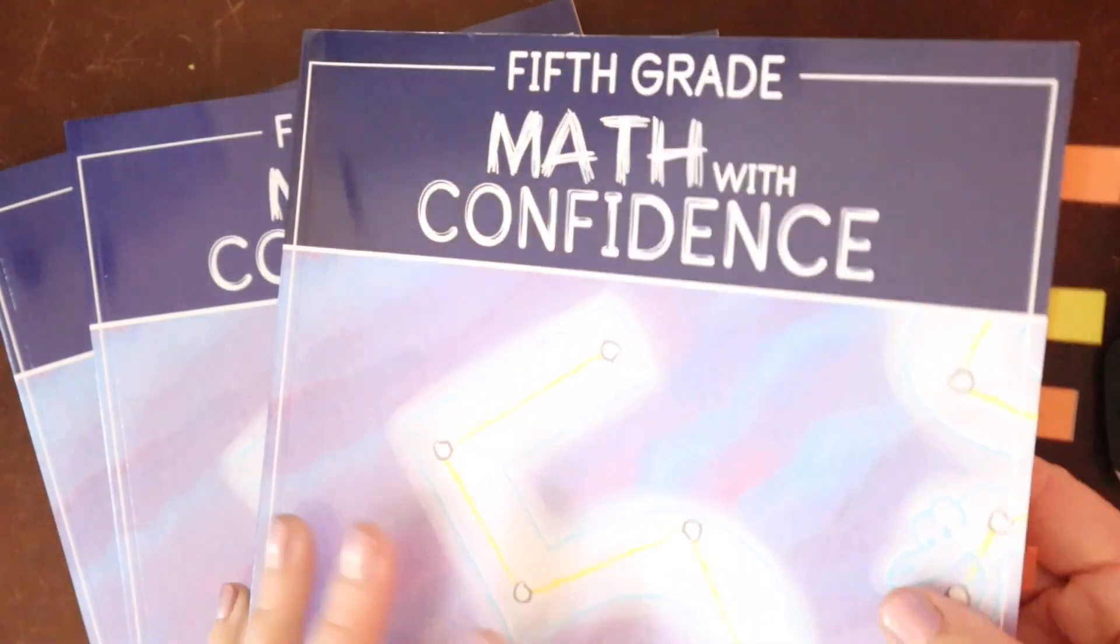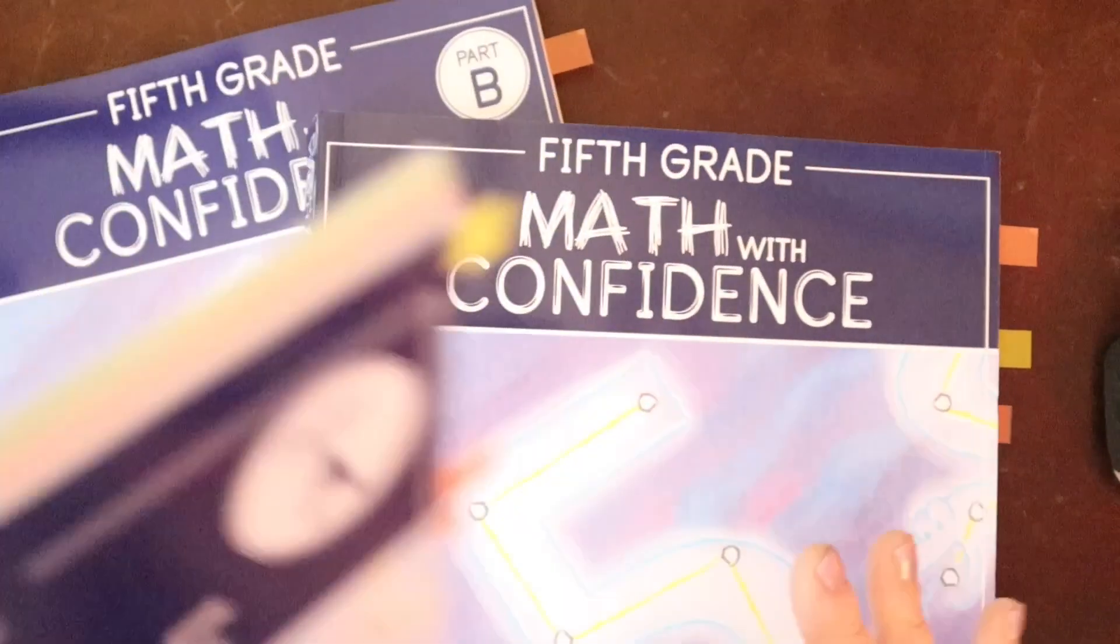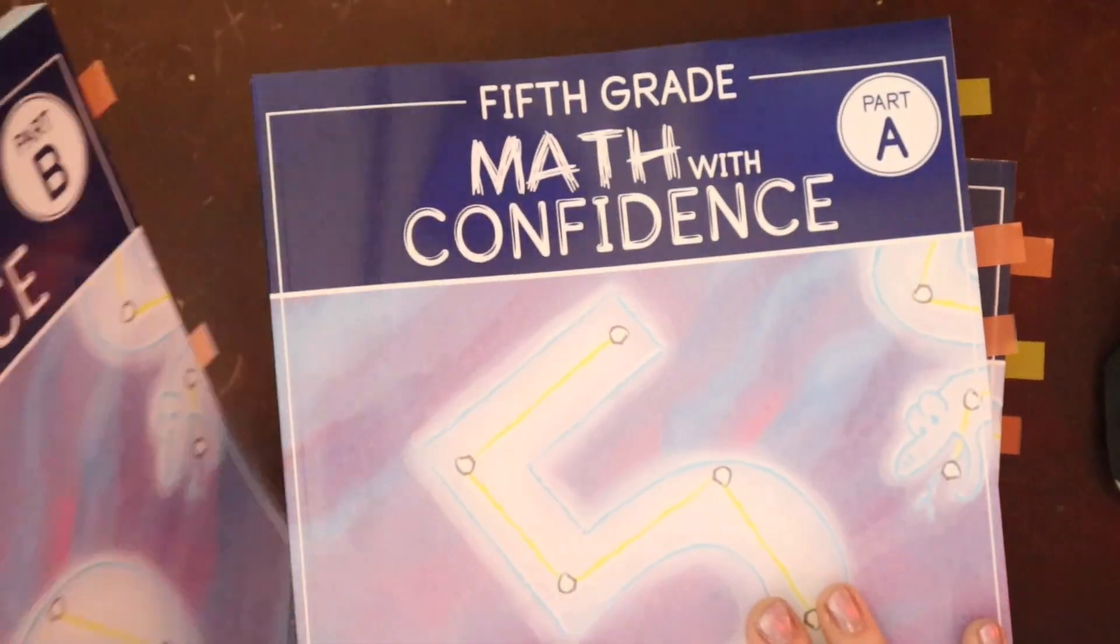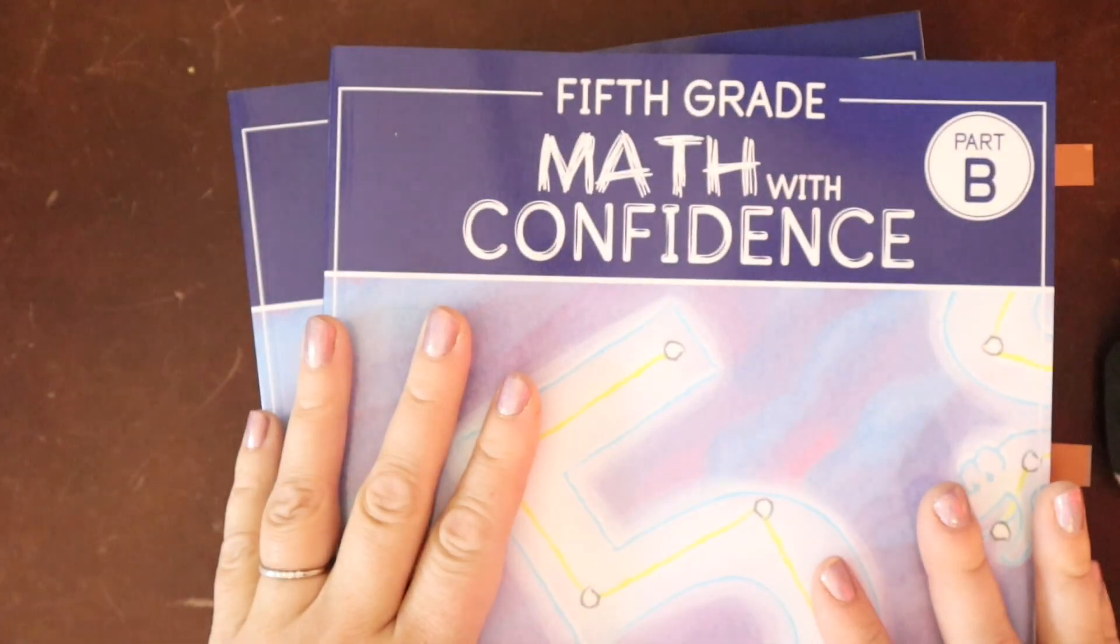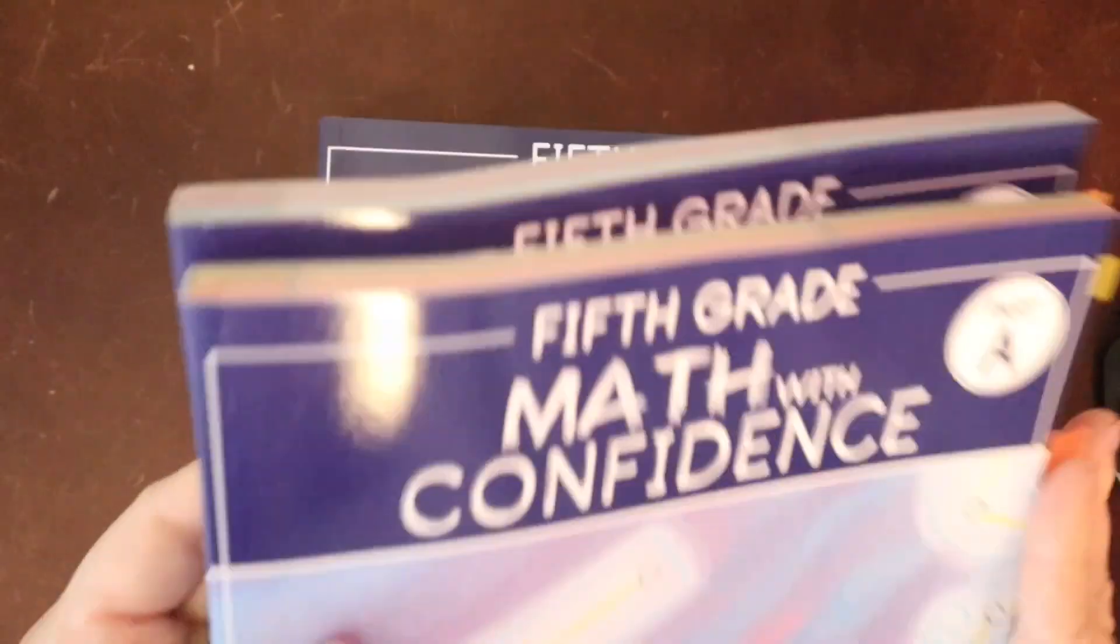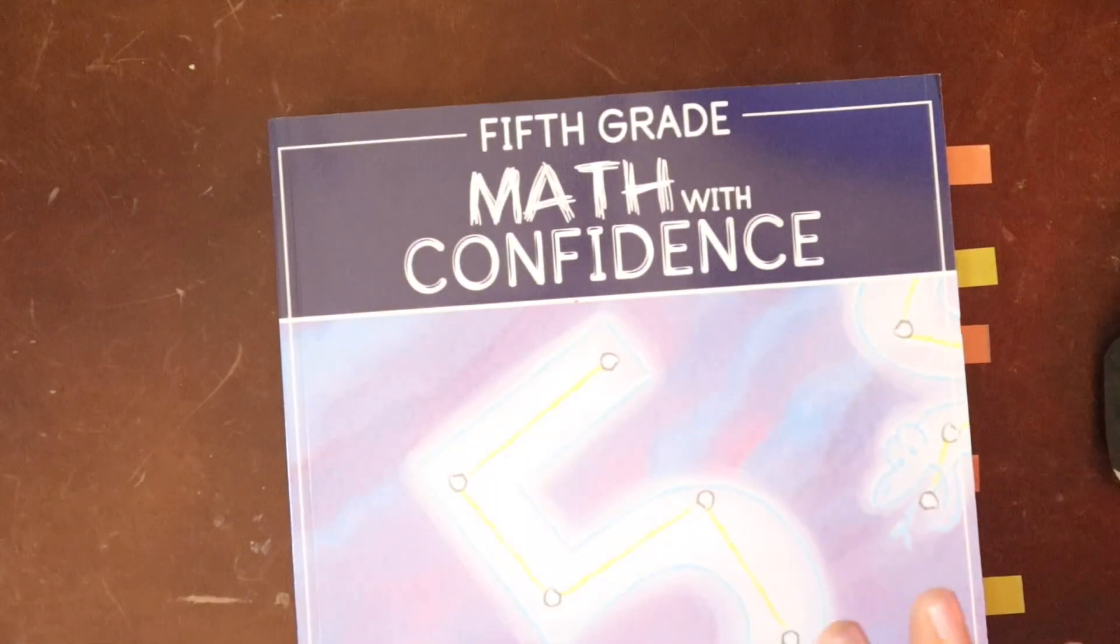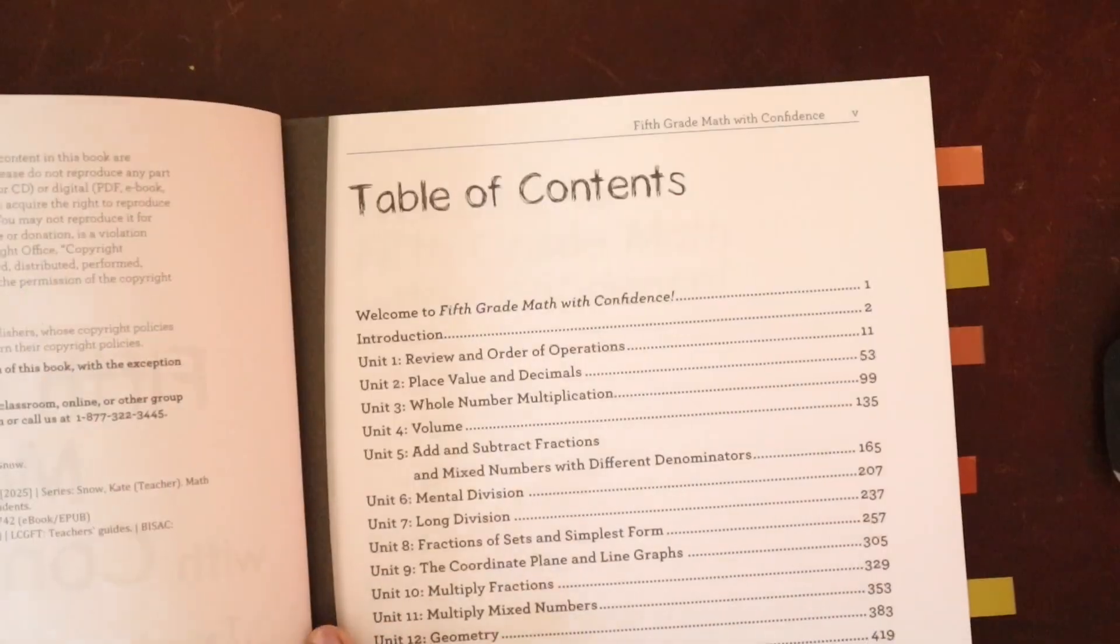What does this program include? You get your giant beast of a teacher guide, and then you have two volumes for your student workbook. This is the same as for third grade and fourth grade, where you had volume A and volume B, just to break up the workbook so the students don't have this super giant workbook. So let's put that aside for a minute and we'll look at the teacher guide.